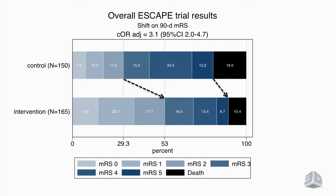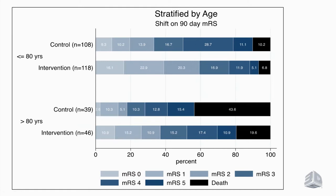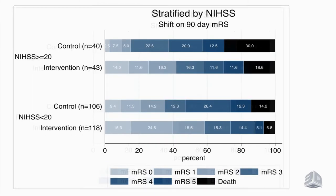Here in the graph, the shift analysis shows the outcome of patients with a modified Rankin Scale 0 to 2 versus those treated with interventional thrombectomy. We see a massive shift toward better outcome in patients treated with endovascular treatment, and also a tendency toward fewer deaths. This benefit was the same when patients were stratified by age and by sex — again, overwhelming benefit.